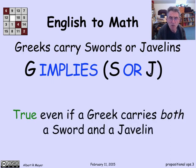The problem is, what does or mean? It turns out that for javelins and swords, it's true even if a Greek carries both a sword and a javelin. This is an inclusive or. A Greek soldier would carry both because a javelin is a good long distance weapon and a sword is good for defending yourself close in. You certainly want to have both, especially after you've thrown your javelin.